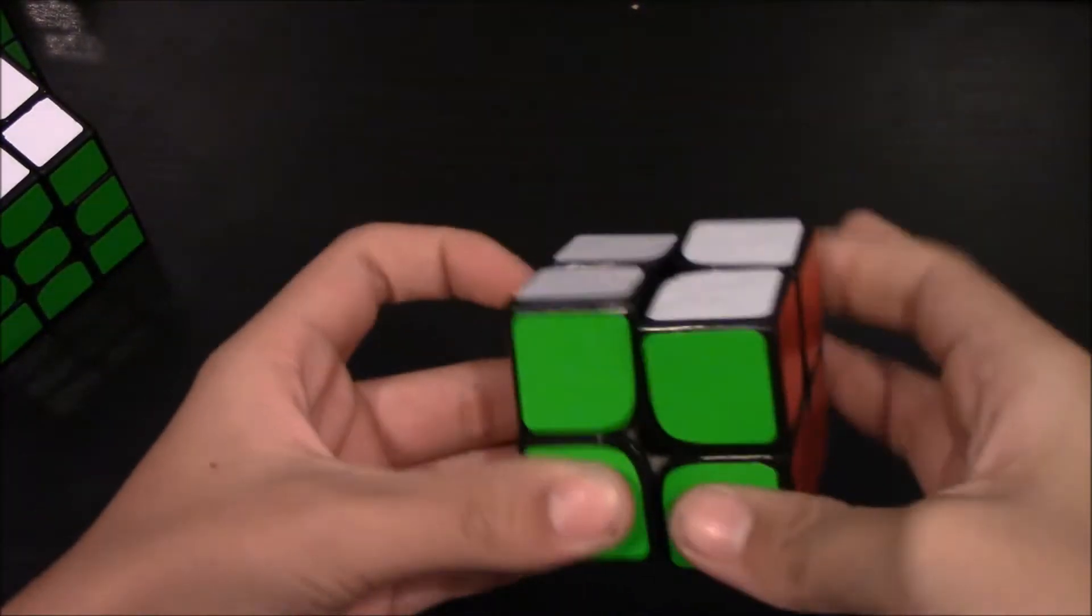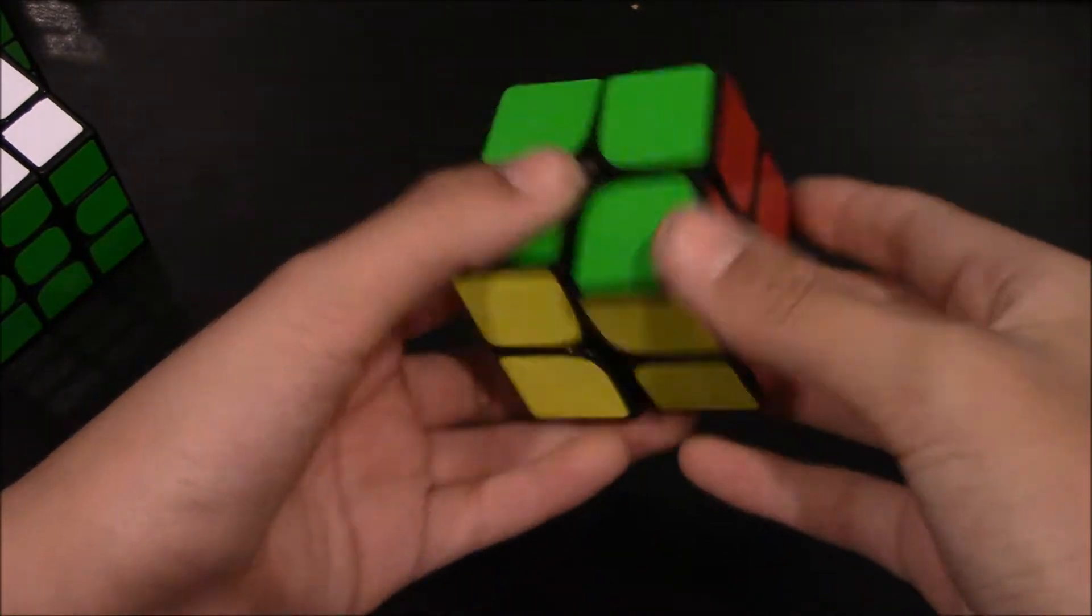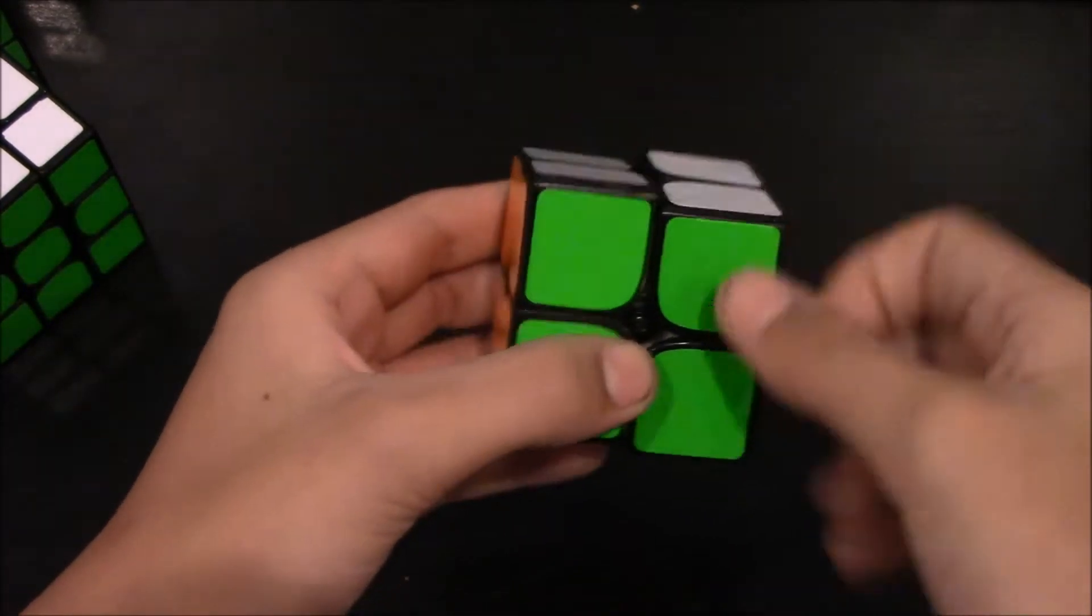Starting off with 2x2, I'm using a Dian 2x2. I'm hoping for a sub 2.5 average and to beat my amazing 178 single.